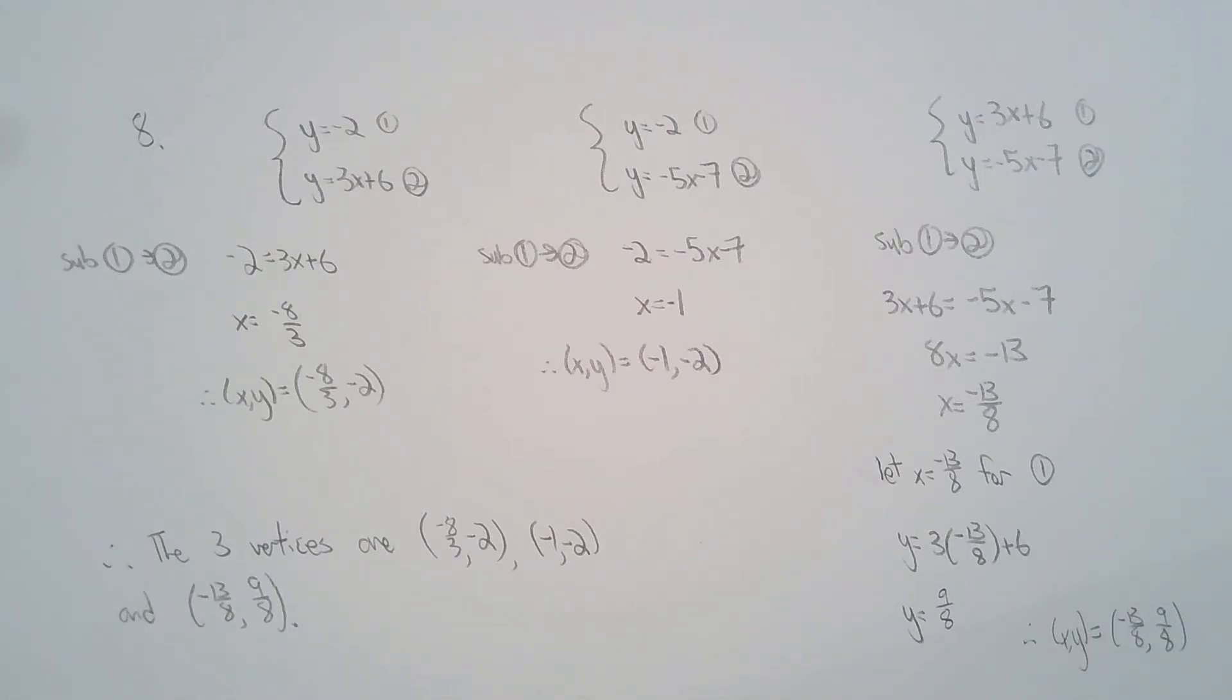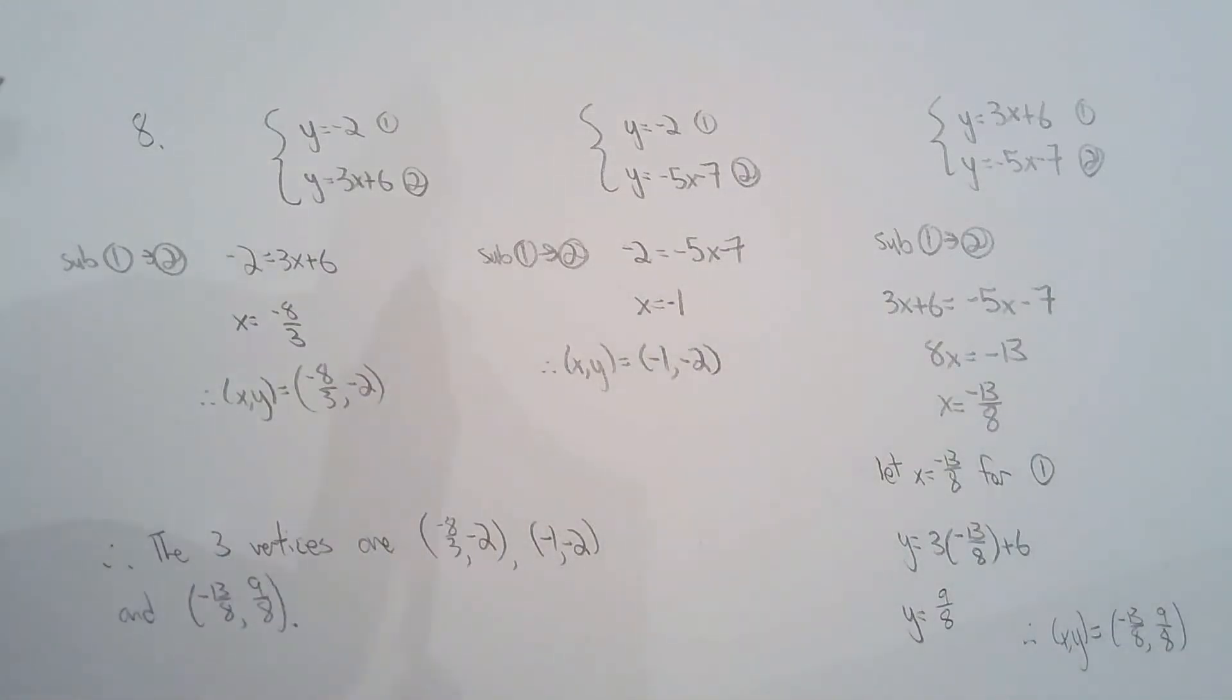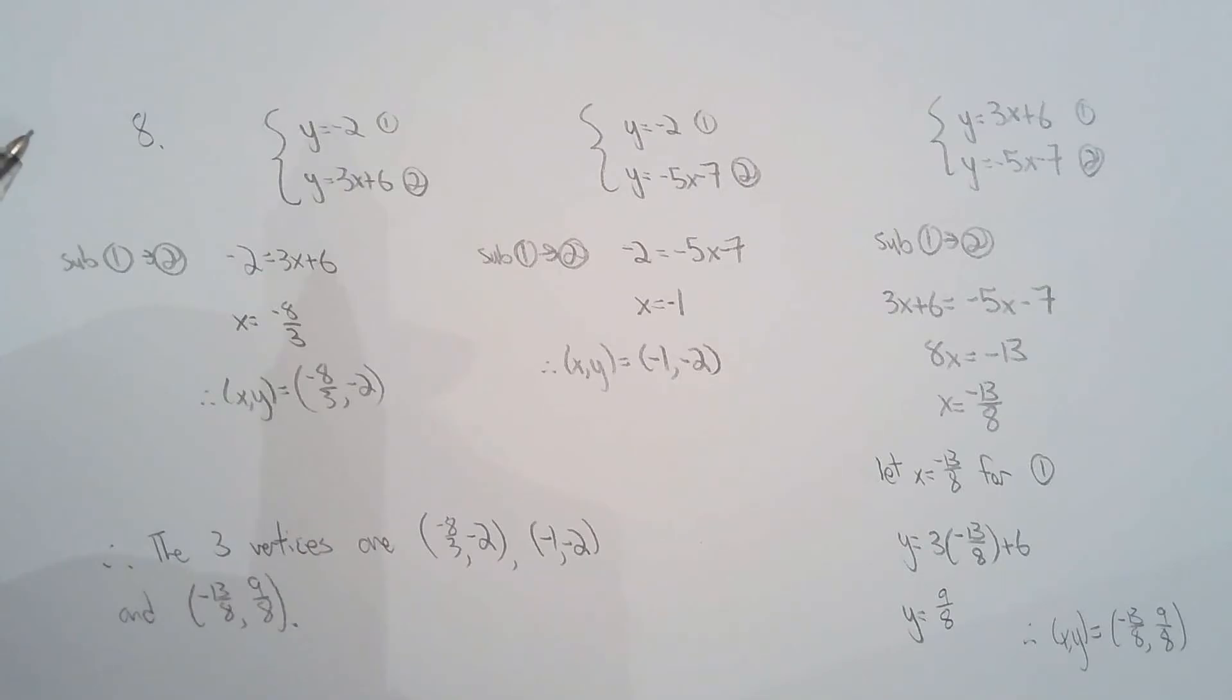So they just want to know where the three vertices are, which is basically the solutions to the linear systems. So I took the three equations and generated three systems using a different pair every single time. So you only get three different pairs from three linear equations.